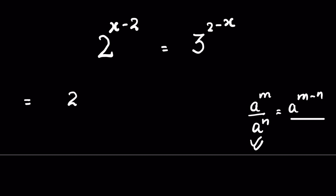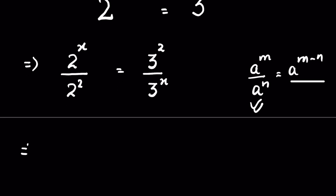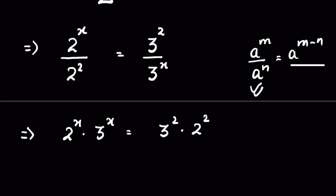So let's write 2 raised to the power x minus 2 as 2 raised to the power x upon 2 raised to the power 2. Similarly, 3 raised to the power 2 minus x is 3 raised to the power 2 upon 3 raised to the power x. Now let's cross multiply, so we will have 2 raised to the power x times 3 raised to the power x is equal to 3 raised to the power 2 times 2 raised to the power 2.